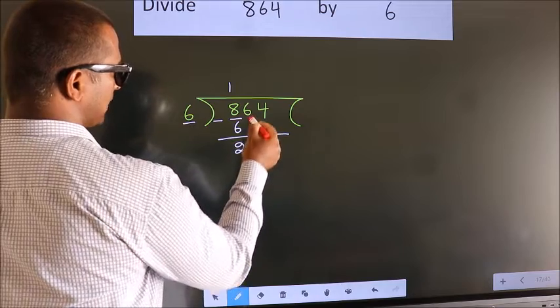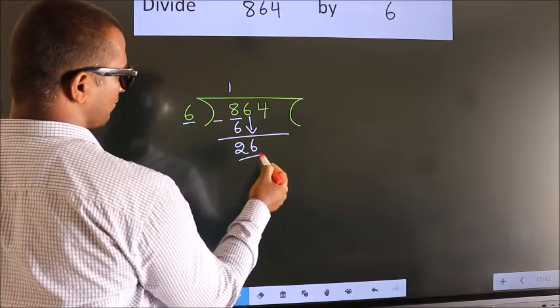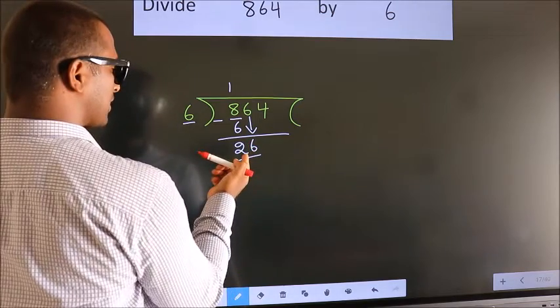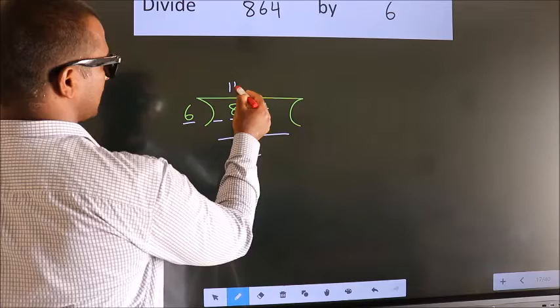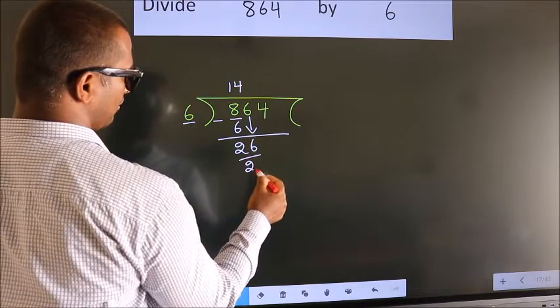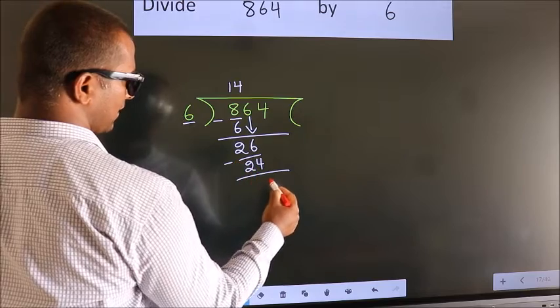After this, bring down the beside number. So, 6 down. That gives us 26. A number close to 26 in the 6 table is 6 fours, 24. Now we subtract. We get 2.